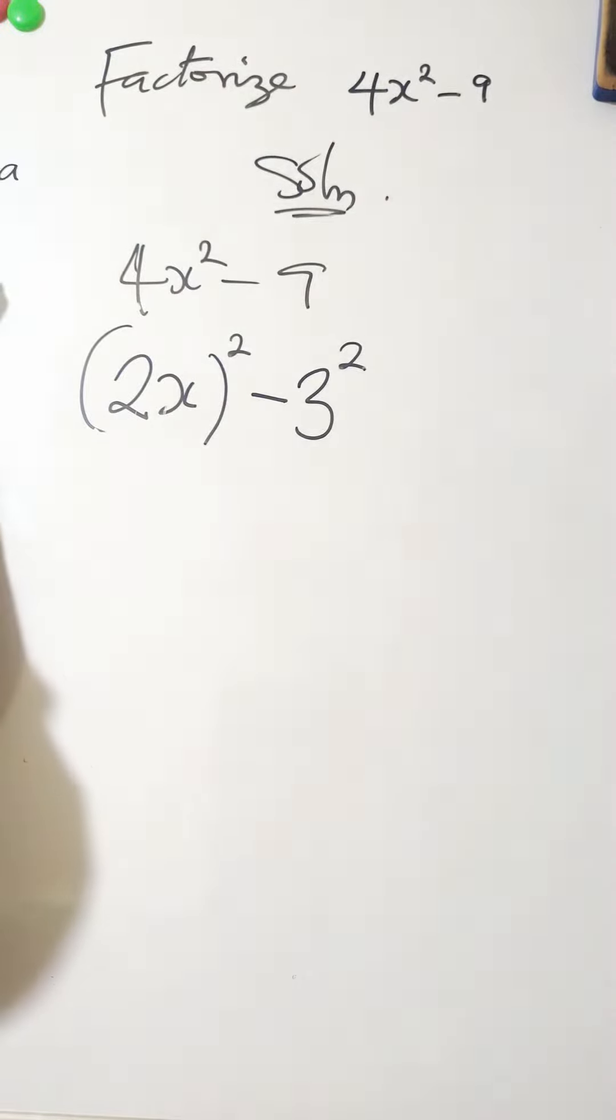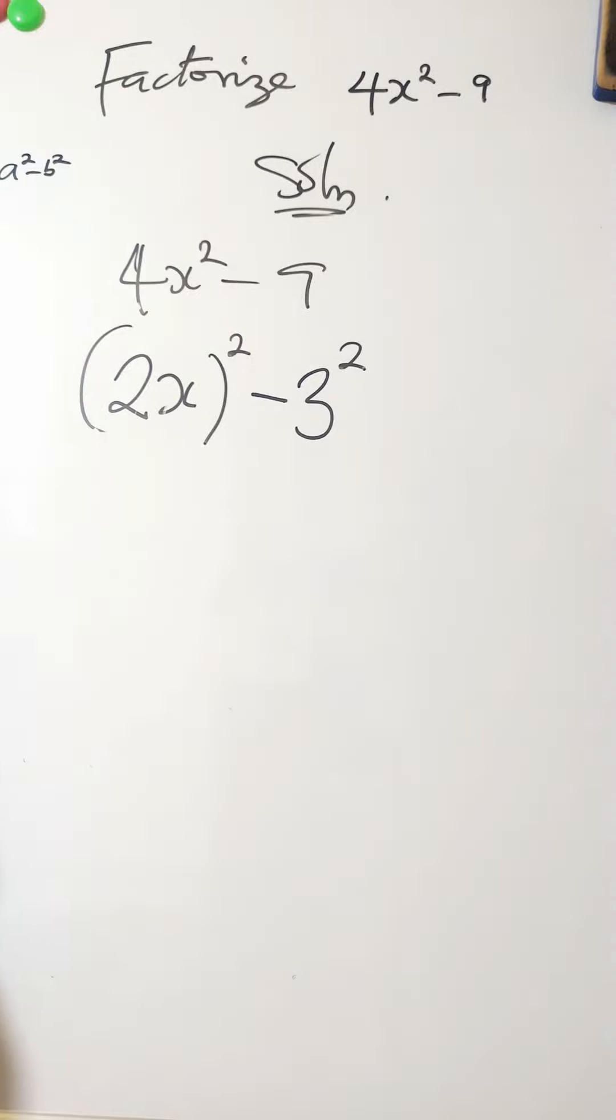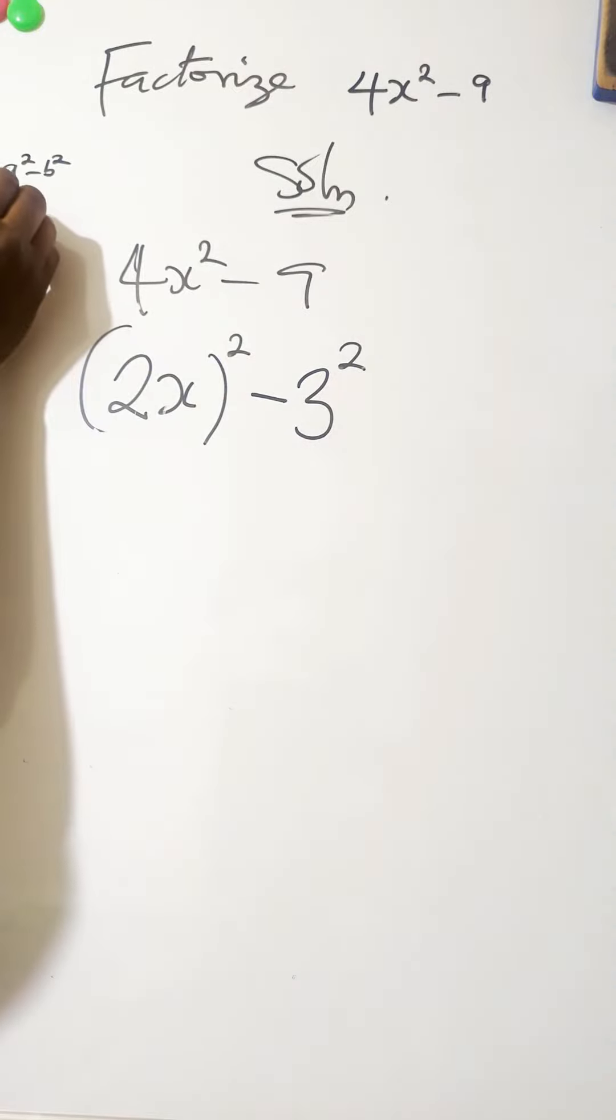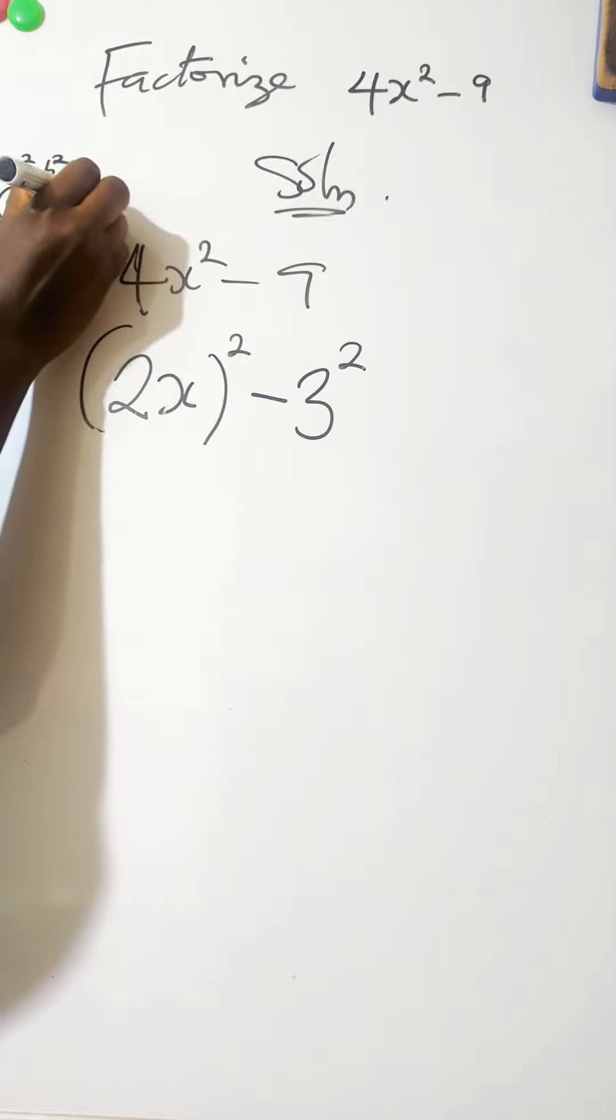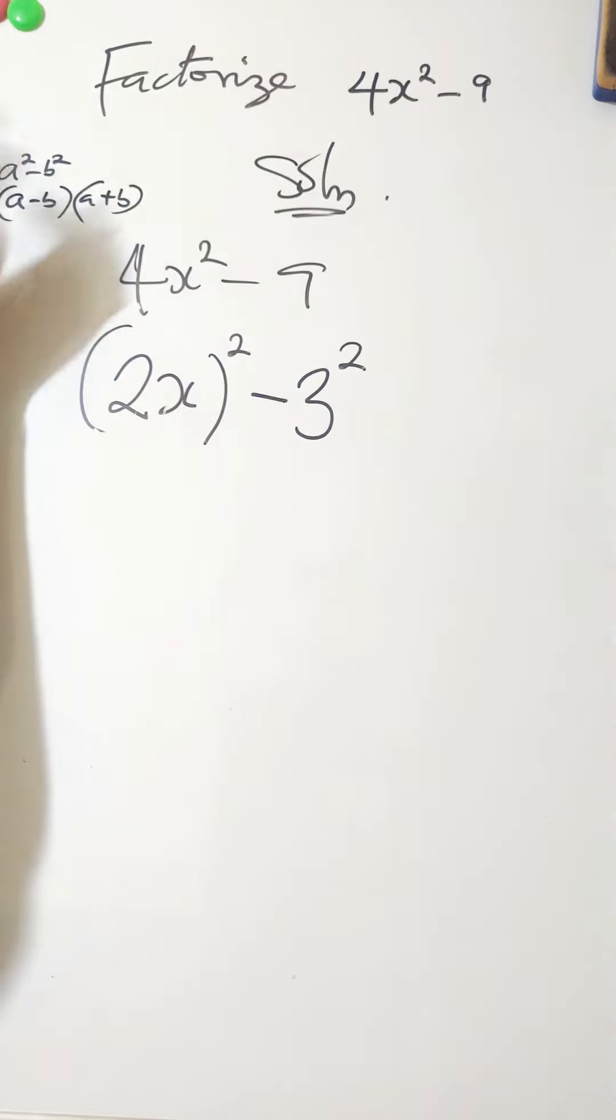a squared minus b squared, this is what it is looking like. It's the same thing. We can write it as a minus b bracket a plus b. If you expand this, you have exactly this. So we call it difference of two squares.